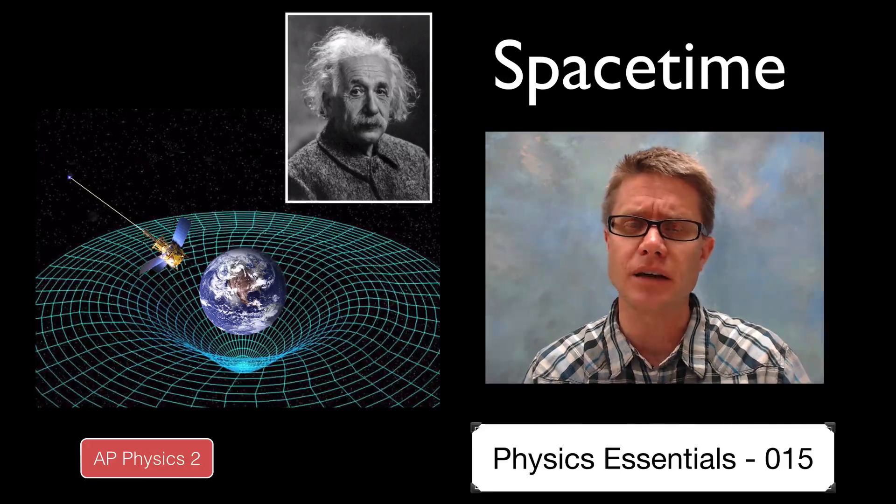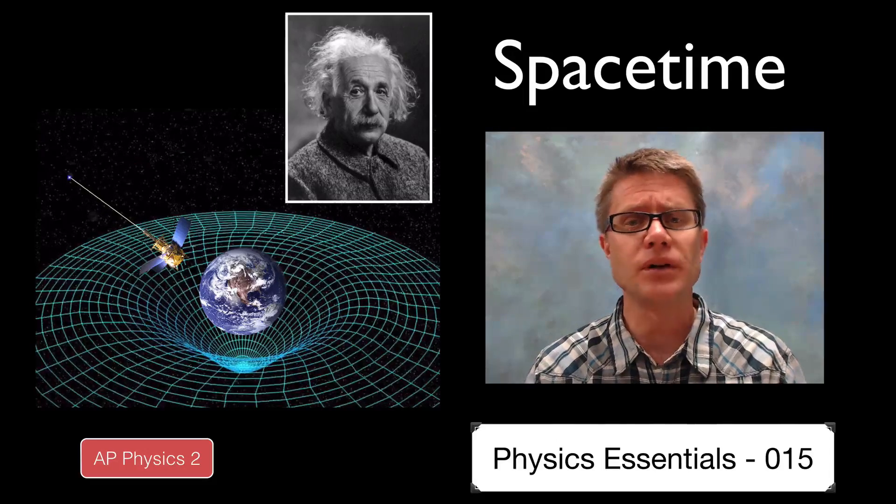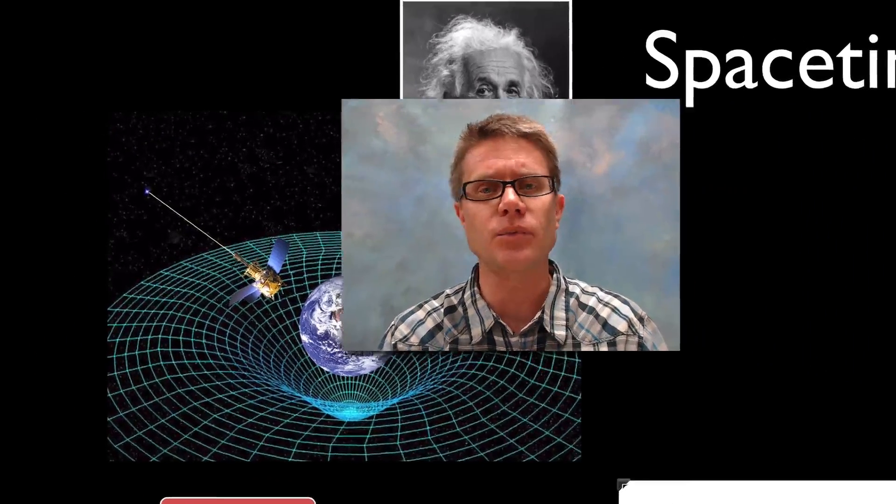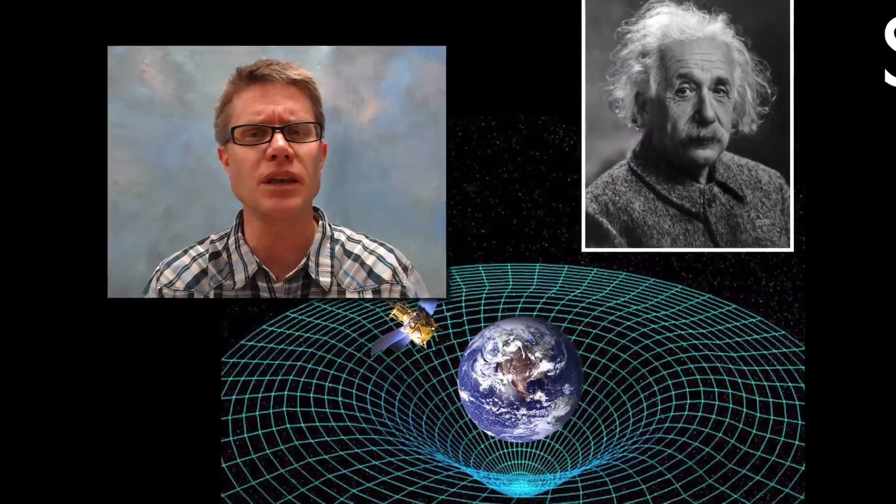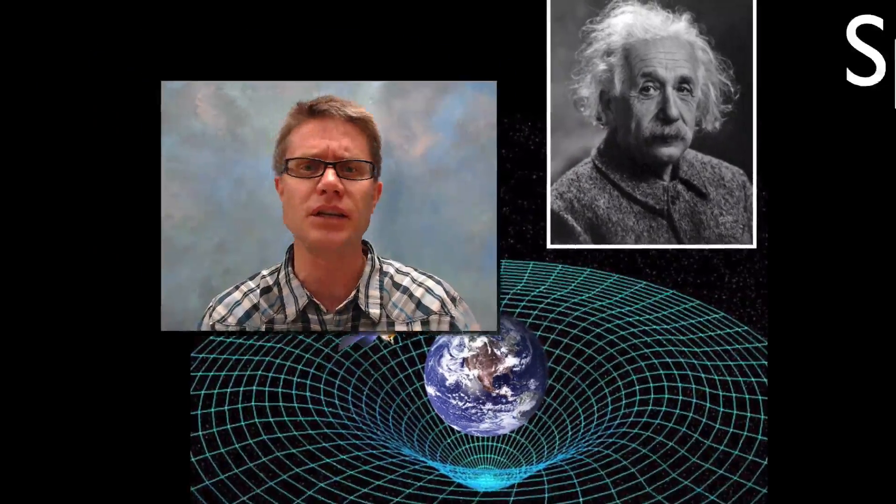Normally in classical mechanics we treat space and time separately. But in relativistic mechanics, developed by Albert Einstein, we have to combine these two because they can be affected by gravity and velocity.